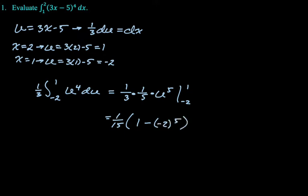All right, and then we just have to simplify this. So negative two to the fifth is negative 32. But it's minus negative 32. So we'll get plus 32. So we're going to have one 15th of one plus 32, which is going to be 33 over 15, which is going to be 11 over five. That's how we can do the problem. Let's take a look at the next thing.